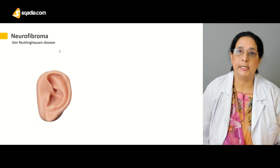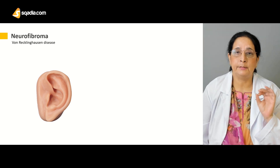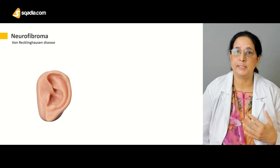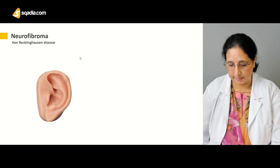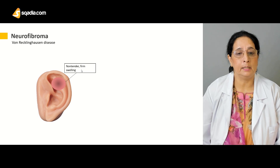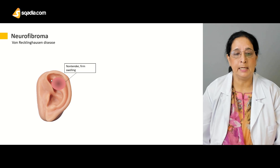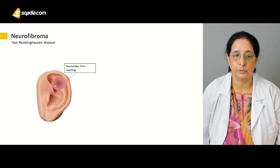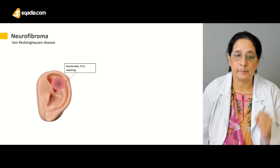Neurofibroma, as the name shows, develops from the sheath of the peripheral nerve fibers. One disease in which multiple neurofibromas are present is called von Recklinghausen disease. In the external ear, neurofibroma is typically located in the helical fossa — the fossa of the helix. It is non-tender and presents as a firm swelling.